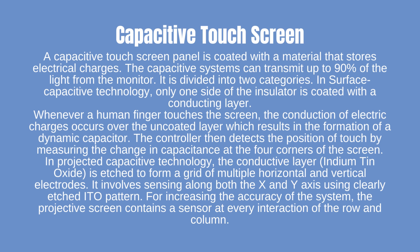A capacitive touchscreen panel is coated with a material that stores electrical charges. Capacitive systems can transmit up to 90% of the light from the monitor. In surface capacitive technology, only one side of the insulator is coated with a conducting layer. When a human finger touches the screen, conduction of electric charges occurs over the uncoated layer, forming a dynamic capacitor. The controller detects the position of touch by measuring the change in capacitance at the four corners of the screen. In projected capacitive technology, the conductive layer of indium-tin-oxide is etched to form a grid of multiple horizontal and vertical electrodes, sensing along both x- and y-axis using etched ITO pattern, with a sensor at every intersection of row and column.